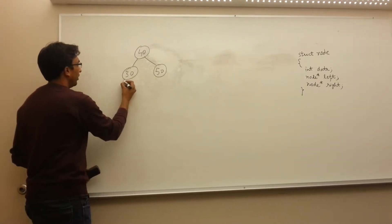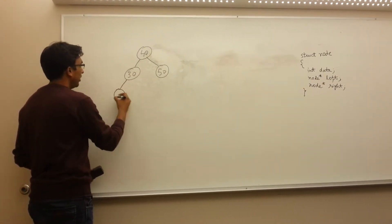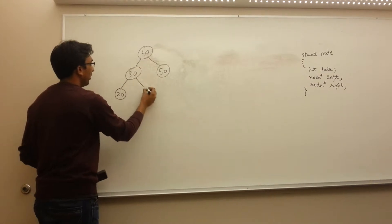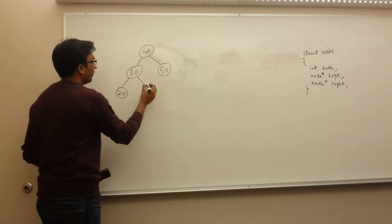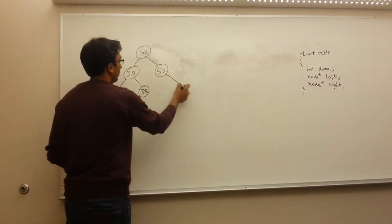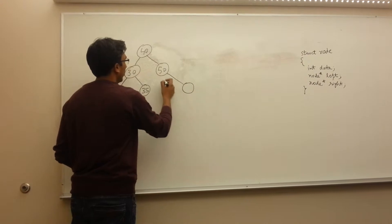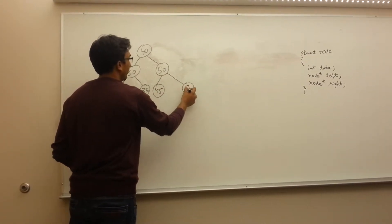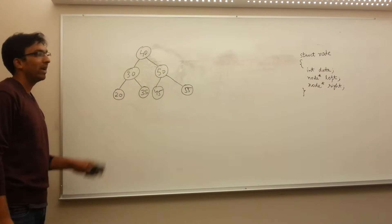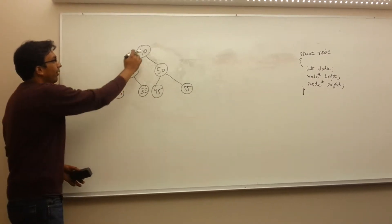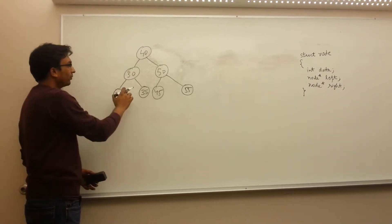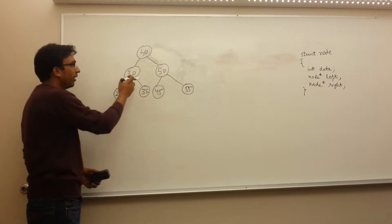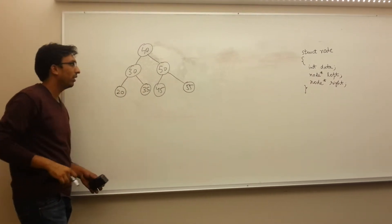We can extend this further. So we add 20, 35, 45, and 55. This represents our binary search tree — at every level, in each node, its left child is smaller than it and its right child is bigger than it.